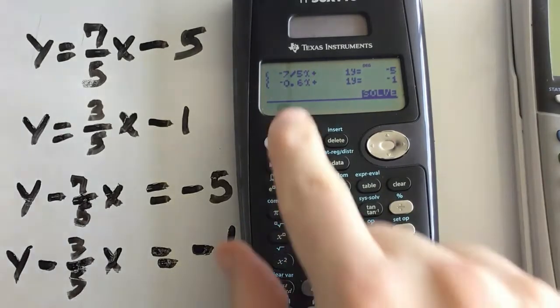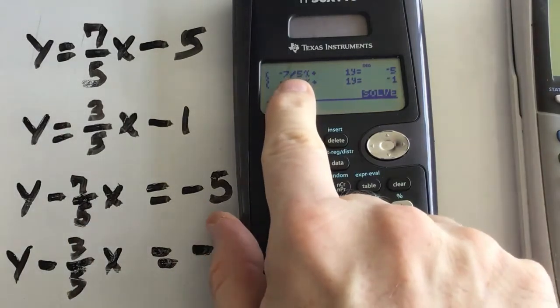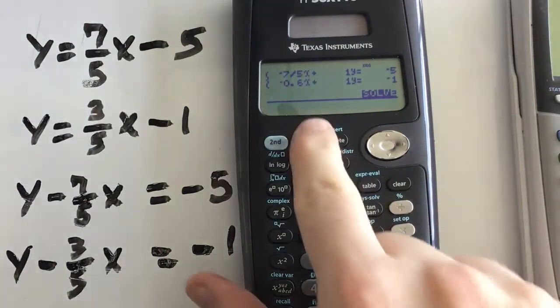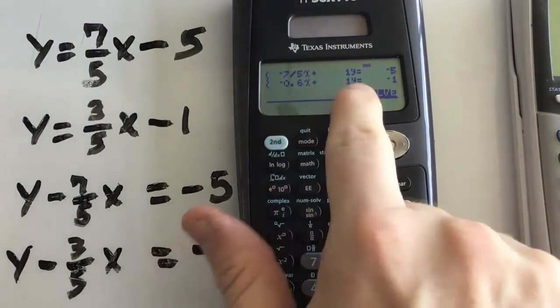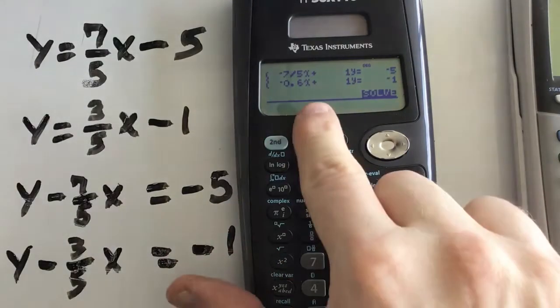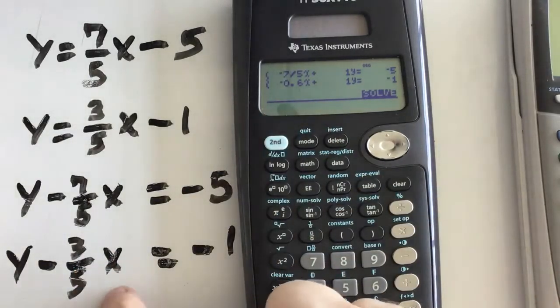One other thing to note, when I used the fraction bar, notice how it gave me a fraction line. But when I used the division button, it converted it to a decimal. Don't worry. It can be either way. It will still solve it correctly for you. Even if this number doesn't exactly match that number.